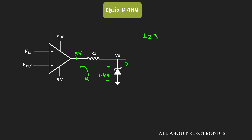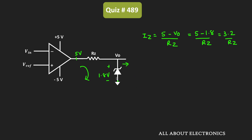The current IZ can be given as: IZ = (Vout_supply - Vout) / RZ, where Vout is equal to 1.8V. That means IZ = (5 - 1.8) / RZ, which equals 3.2 / RZ. This Zener diode will work properly whenever the current flowing through it is greater than or equal to IZ minimum, which is equal to 2mA.